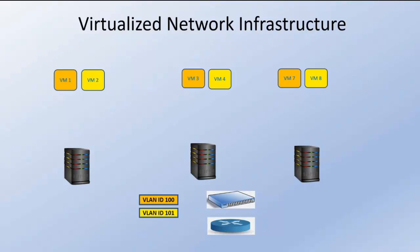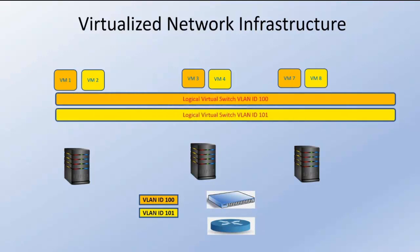Let's see how a virtualized network infrastructure helps us overcome the traditional problems. In the traditional setup, adding new VLAN IDs requires configuring all switches and routers. To overcome this, there are logical switches and logical routers which we can create on top of the hypervisor. All virtual machines connect to these logical switches — for example, VM1 and VM3 connect to VLAN ID 100, and VM2 connects to VLAN ID 101. Both logical virtual switches are connected to this router.